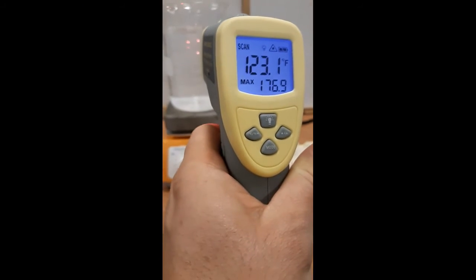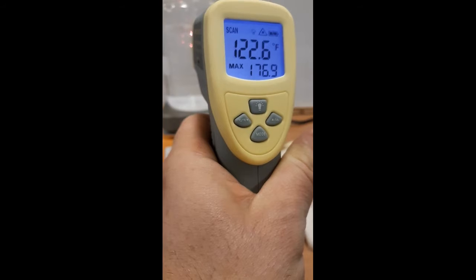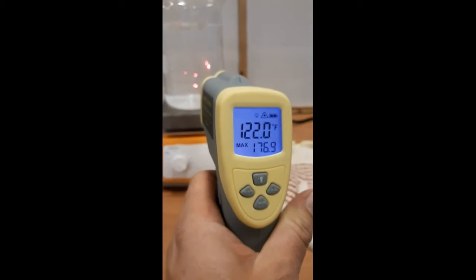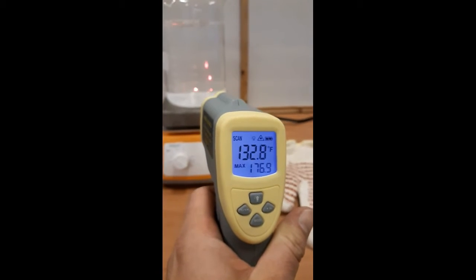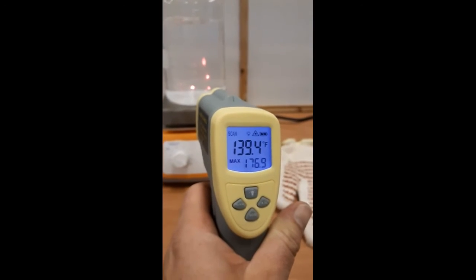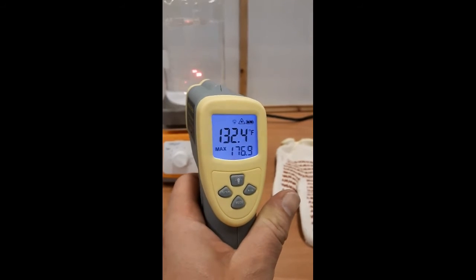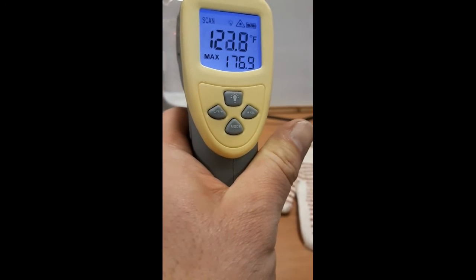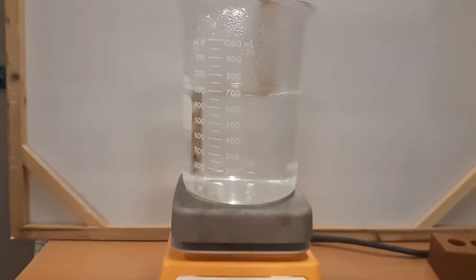As you're seeing with the thermometer, the bottom is about 136 degrees Fahrenheit and the top is 121 degrees Fahrenheit. So there is a discrepancy there. There is a difference. This is all before the water is boiled. So let's go ahead and take a look at this.